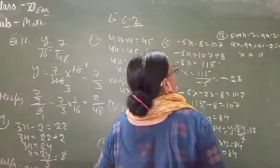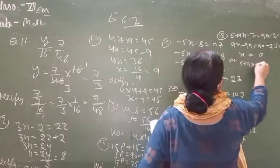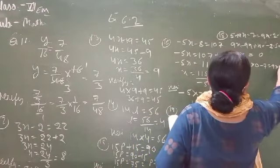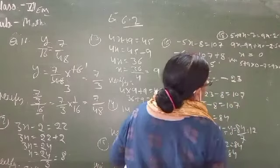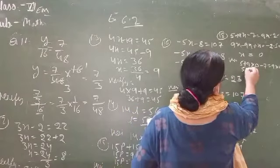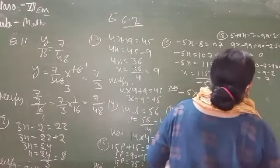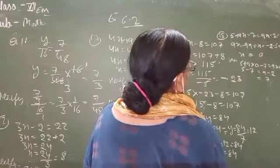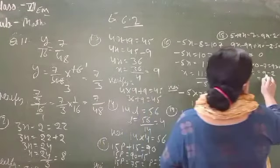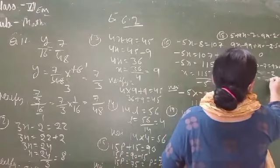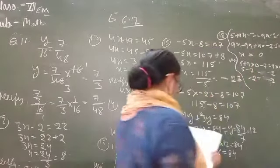Now verify: 5 plus 9 into 0 minus 7 equals 9 into 0 minus 2 minus 0. 5 minus 7 equals minus 2. Negative 2 equals negative 2. Verified. Question 18 complete.